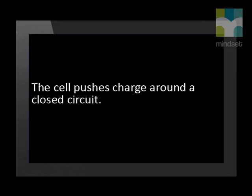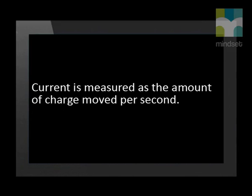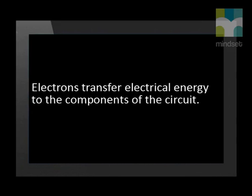This is a very important concept. Write down a summary of what you have learned from this experiment and these animations. The cell pushes charge around a closed circuit. The chemical energy in the cell is transferred as internal energy of the light bulbs. Current is measured as the amount of charge moved per second. Electrons transfer electrical energy to the components of the circuit.